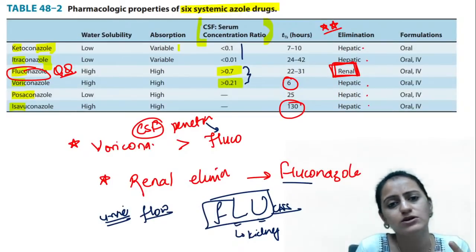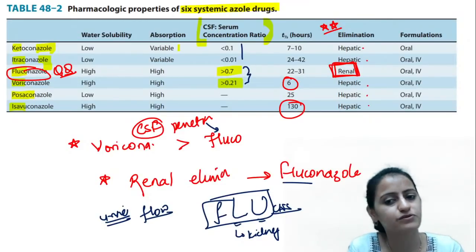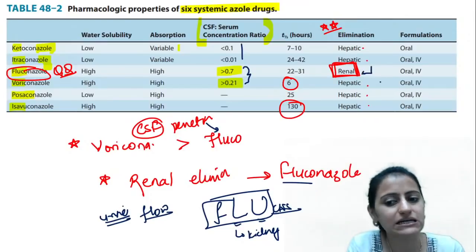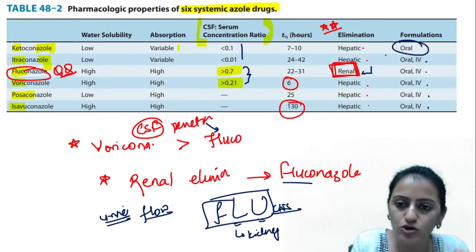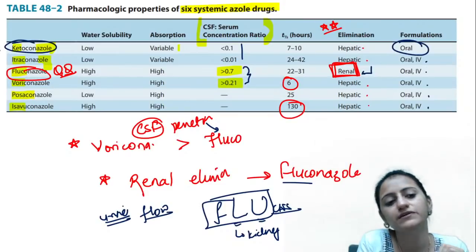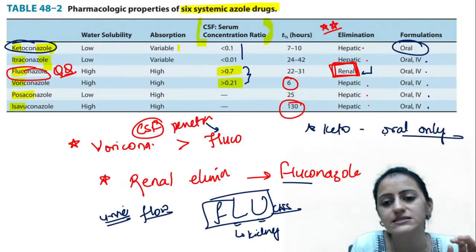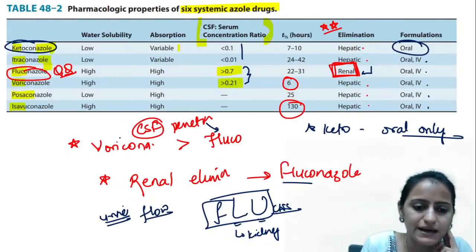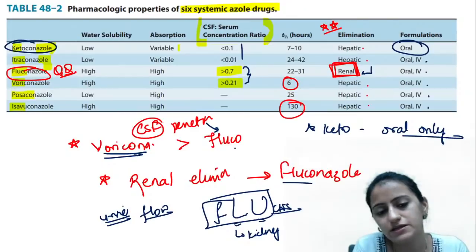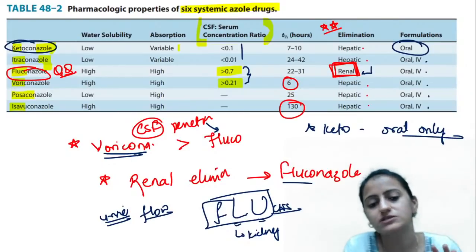Applied question: 'Fluconazole requires dose adjustment in hepatic dysfunction — true or false?' It is false, because fluconazole is eliminated renally, not hepatically. Regarding route of administration: ketoconazole is oral only — it is not available as IV. The key points from this table: maximum CSF penetration — voriconazole, then fluconazole. Renal elimination — fluconazole. Ketoconazole — oral only.